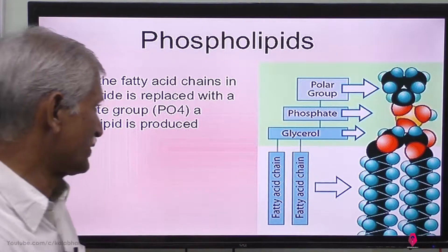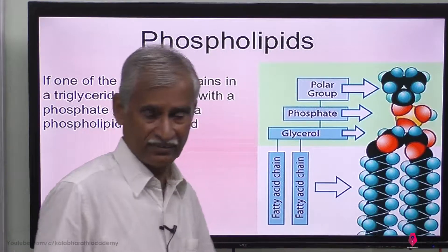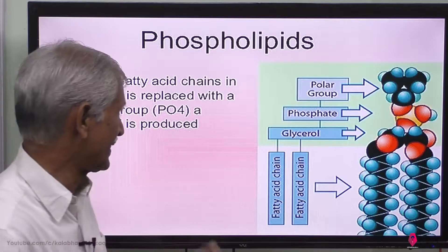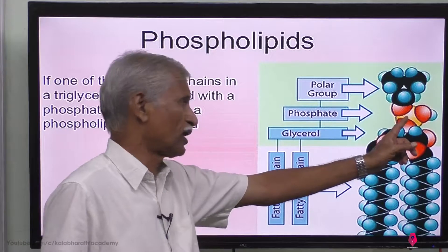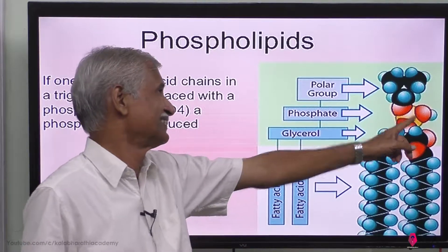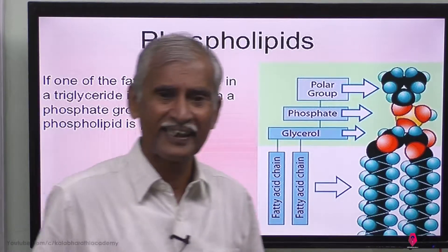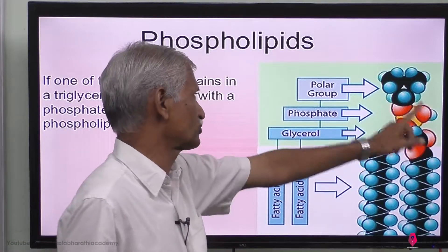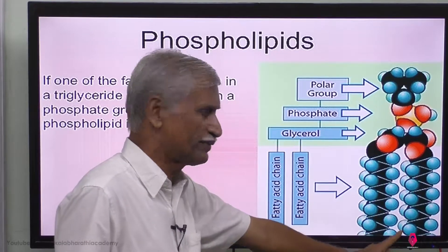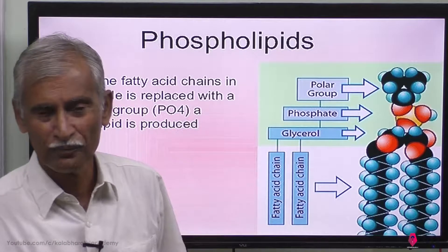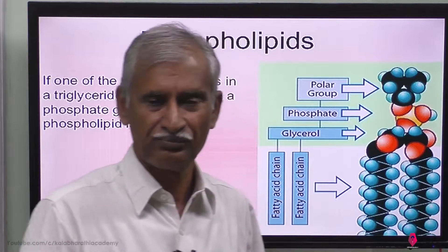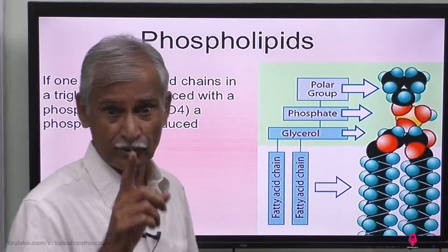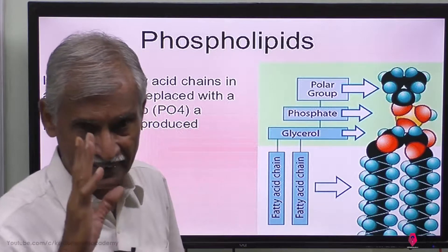In phospholipid, the remaining OH group — where the third fatty acid would go in a triglyceride — instead a phosphate group or phosphoric acid combines. This phosphoric acid then combines again with another alcohol, making it polar. The fatty acid tails become nonpolar. So it is a diglyceride plus phosphate — that is phospholipid, not triglyceride.